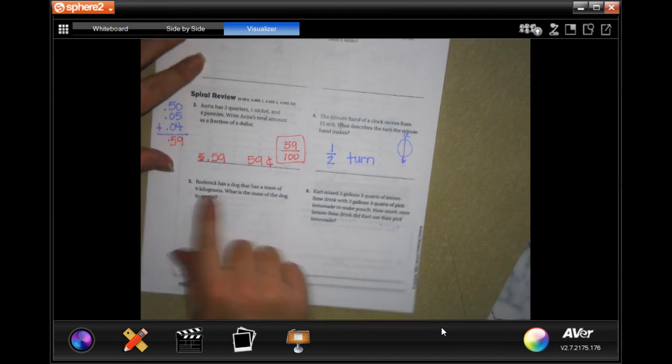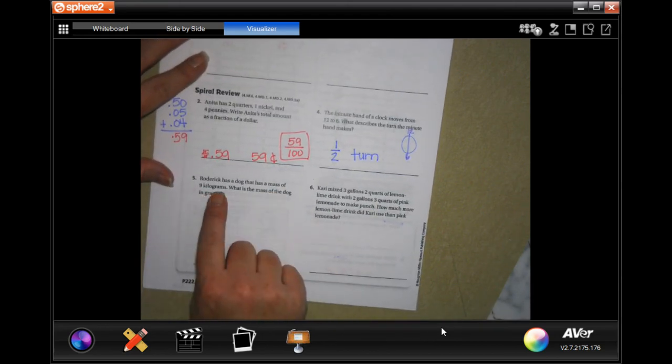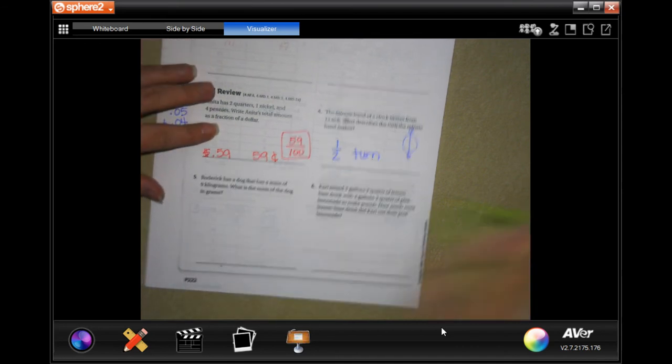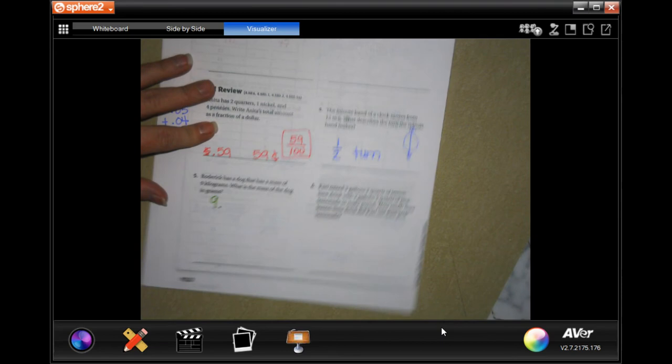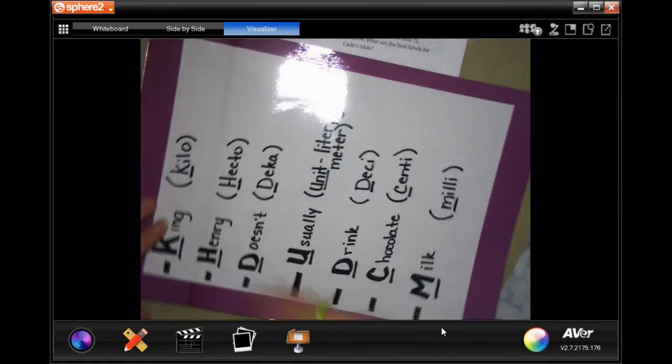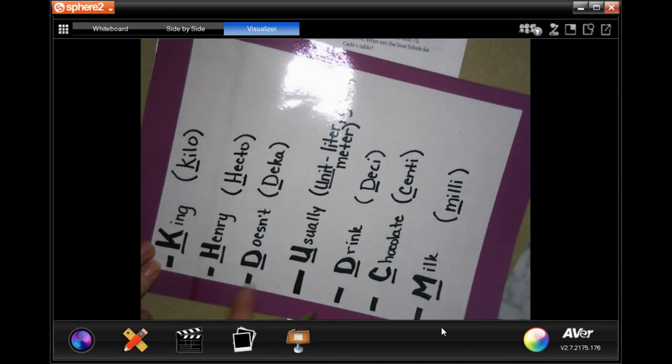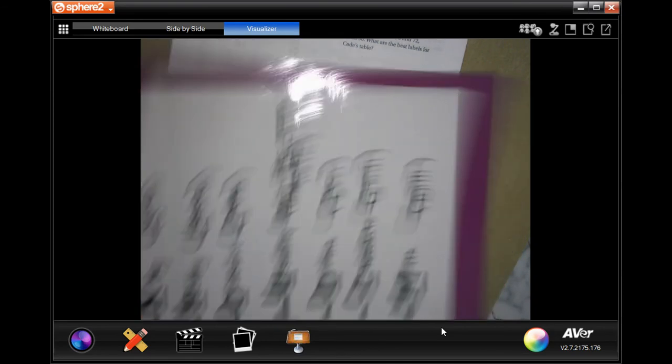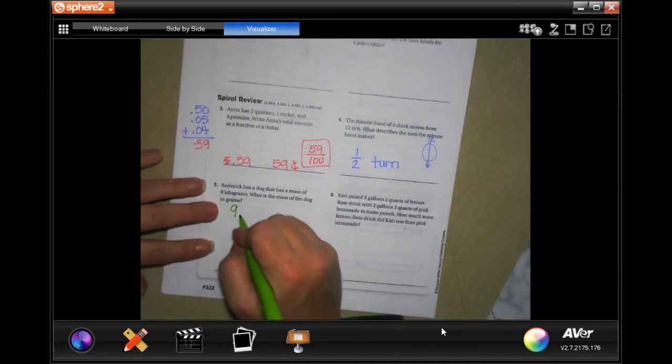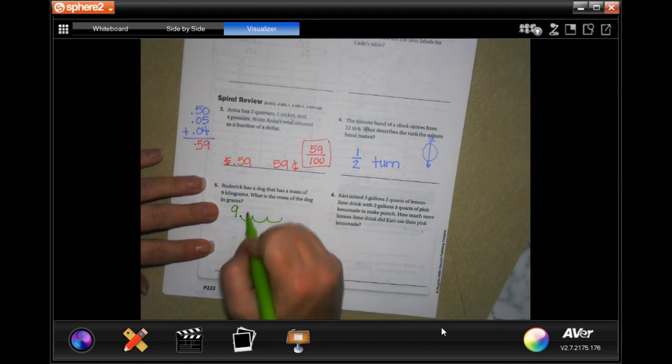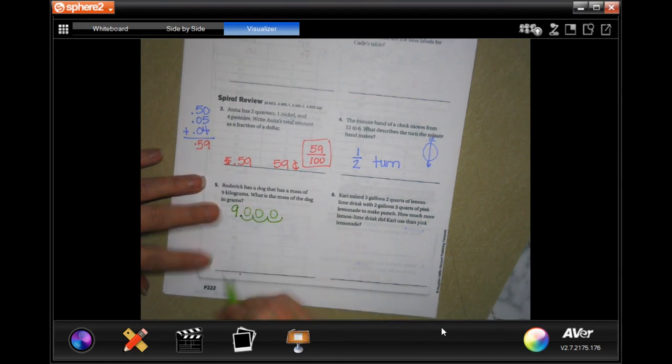Roger has a dog that has a mass of 9 kilograms. What is the mass of the dog in grams? Here's 9 kilograms. We're going to go from kilograms to grams. We're going to move that decimal one, two, three times to the right and put zeros in there. 9000 grams.